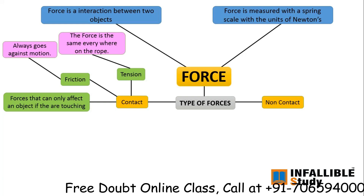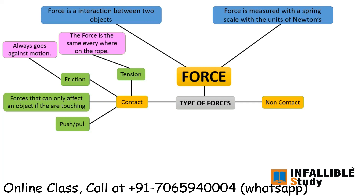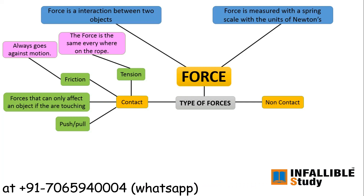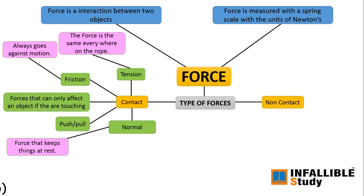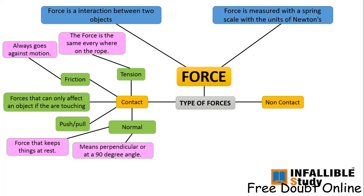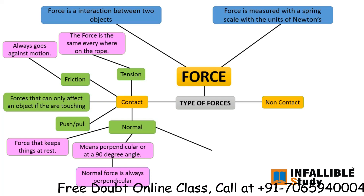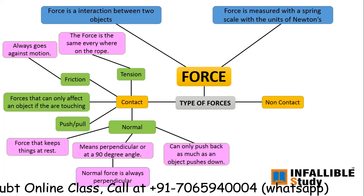The third contact force is push or pull, which is also a type of contact force. Our last contact force is normal force. It is a force that keeps things at rest, acting perpendicular at a 90-degree angle. Normal force is always perpendicular, and it can only push back as much as an object pushes down.